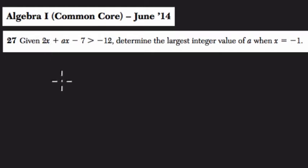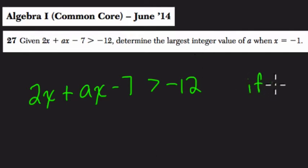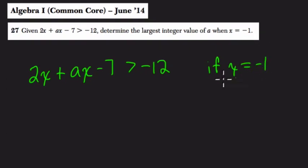It says that we're given 2x plus ax minus 7 is greater than negative 12. Determine the largest integer value of a when x equals negative 1. So that's just saying if x is equal to negative 1, what does a equal, or what is the largest value of a in this inequality?